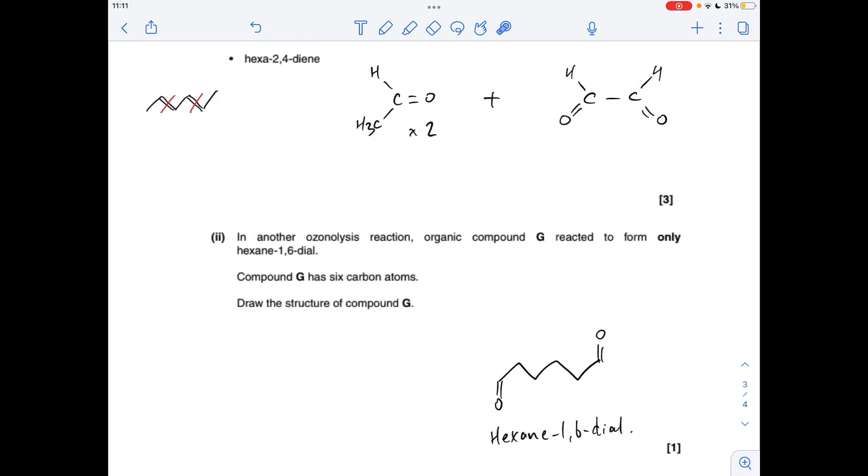And for the final part we're kind of applying the reaction in reverse. So we're told what the product is, hexane-1,6-diol, so compound G must have a carbon-carbon double bond between these carbons here so it's going to be a ring. So that means G is cyclohexene.